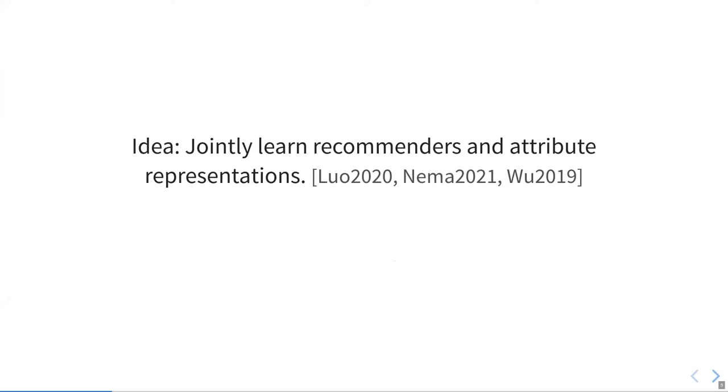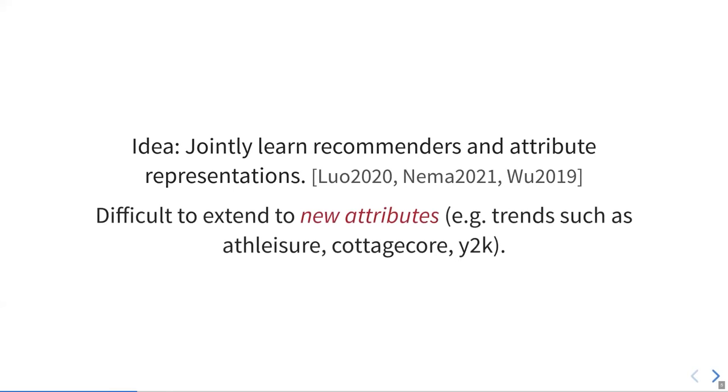There are several approaches to this that jointly learn recommenders and attribute representations. One of the difficulties is that it's hard to extend this to new attributes. The example I gave is a fashion shop, so they're going to have lots of new trends. For example, athleisure is a trend that emerged during the past years. Cottagecore is another. Y2K now doesn't refer to a bug, but refers to a fashion trend that features throwback fashion from the 2000s. All of these things should be able to also have representations, while we don't want to retrain the whole model.